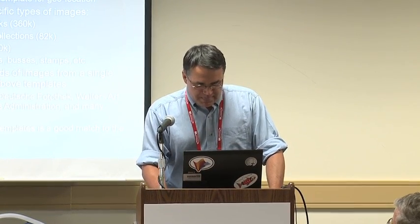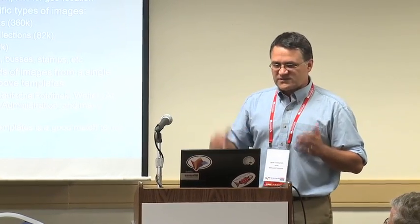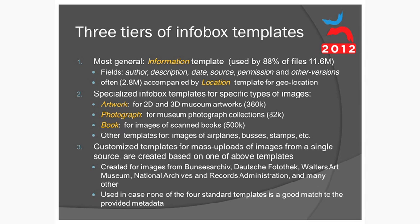There are three tiers of Infobox templates you might find on Commons. The most general is the Information template, used by about 11.6 million files — 88% of files. It has fields for author, description, date, source, permission, other versions, and that's about it. It's good enough for most files.